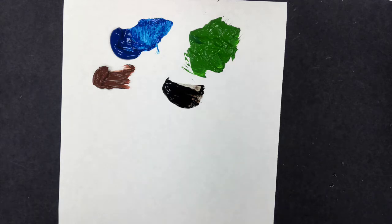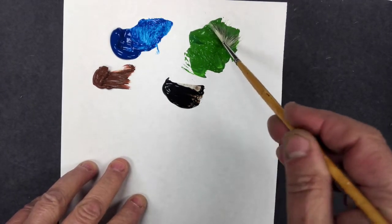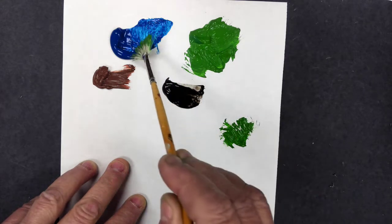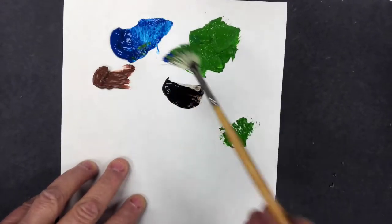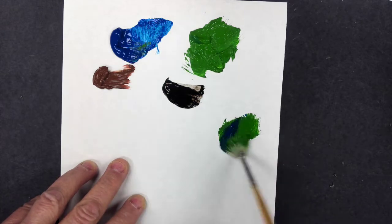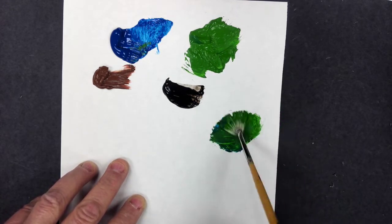Now what you're going to do is with your green, you're going to put some green over here, just a part of a brush full. Pick a corner of the fan brush, just mix this in with a little bit of blue. Just a little bit of blue and green.